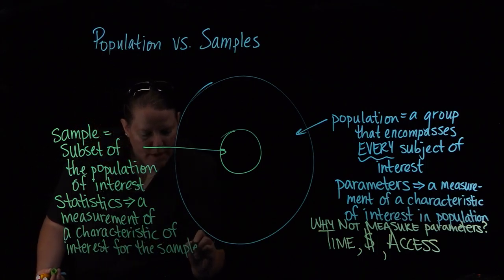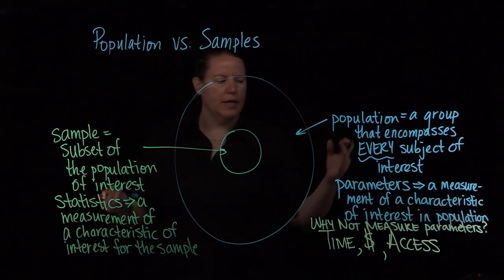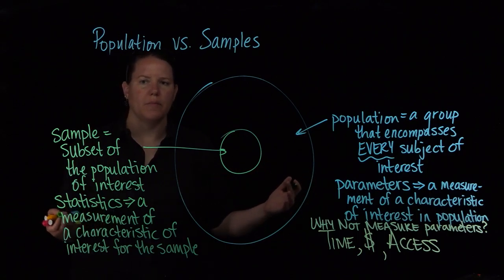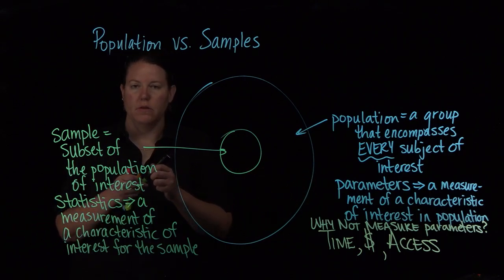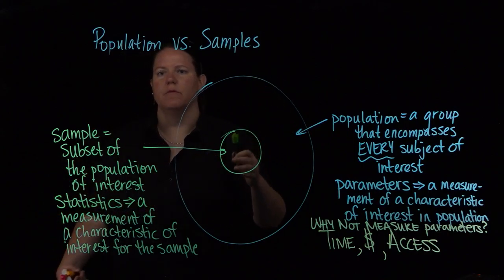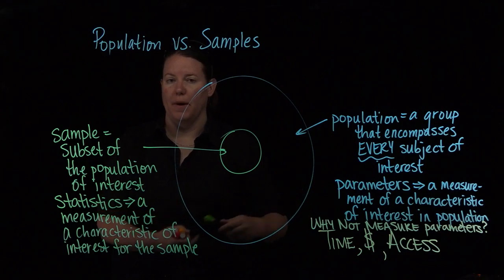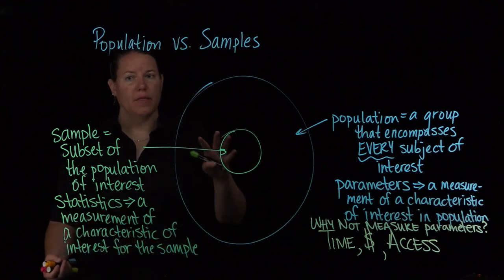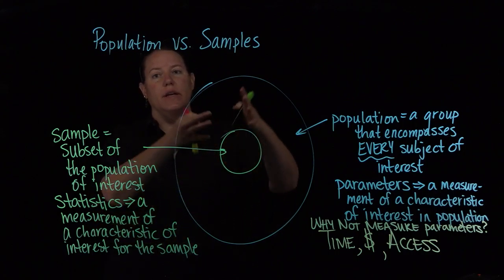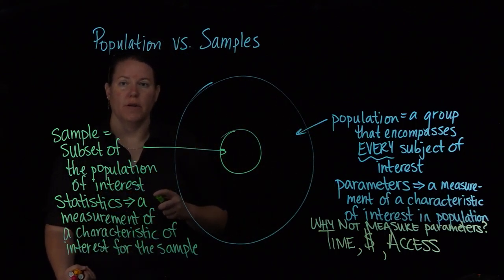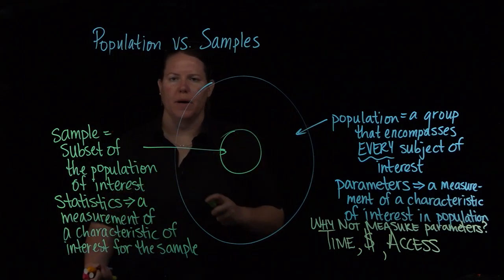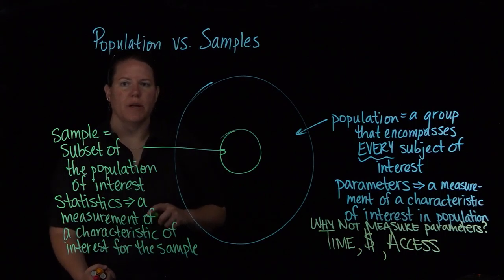And we're hoping our sample is as close in almost every way we can make it to the population so that we can basically say, when I measure something about this sample, that could also be true about the population. And when I make that statement, when I say the measurements I made on the sample are indicative of the population, that's a process that we call inference. So we're inferring that the sample is enough like the population that we can actually make those kinds of judgment calls.